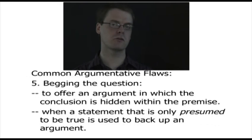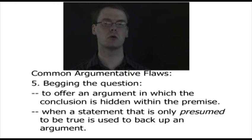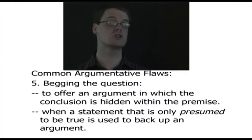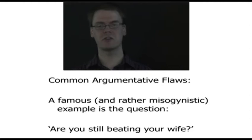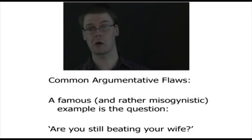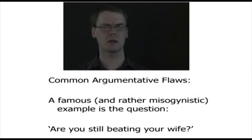The fifth common argumentative flaw is what's called begging the question. Begging the question is where you have an assumption buried into a premise that you are using to prove your conclusion — when a statement that is only presumed to be true is used to back up an argument. A famous and somewhat misogynistic example would be if somebody asked: 'Are you still beating your wife?' There is no way to answer that question that doesn't incriminate you. If you say yes, that's not very good; if you say no, it suggests you have at some point beaten your wife. That question is begging the question — there is an assumption built into it.